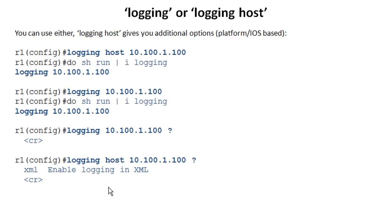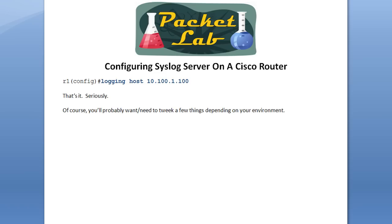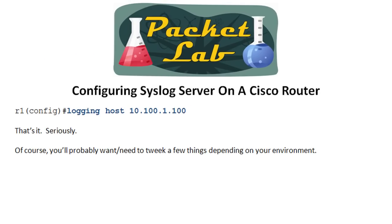If you specified XML and whatever arguments went with that, and issued 'do show run include logging', it would show up as 'logging host IP address XML blah blah blah'. 'Logging host' is probably more correct, but you can get away with either one. So the alpha and omega of configuring a Syslog server on a Cisco device is that you just need to put in the command 'logging host' and then the IP address — and you're done. That's all you really need to do. We're not going to end the lesson here because you'll probably want to tweak a few things depending on your environment, but honest to God, this is the basic configuration. That's all you truly need to enable sending your Syslog messages from your device to a Syslog server.